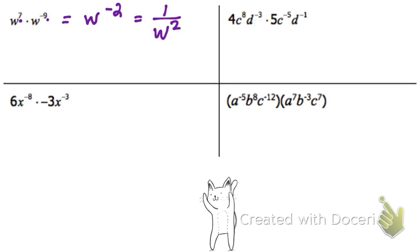And one more, let's do the one right here. If I multiply just the coefficients, that's 20. C's, I have c to the 8th times c to the negative 5th. Remember, when you're multiplying, you add the exponents, so that's c to the negative 3rd. And then d's, I have negative 3 and negative 1, so I add those, that's d to the negative 4th.